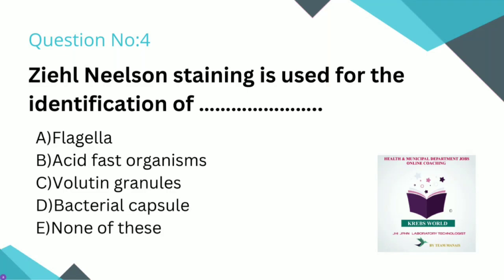Volutin granules demonstration uses Albert stain, Neisser stain, and Ponder stain. For bacterial capsule demonstration, negative staining is used — the capsule appears unstained against a stained background, using Nigrosin staining or India ink staining.